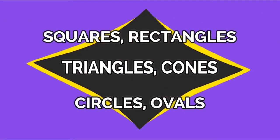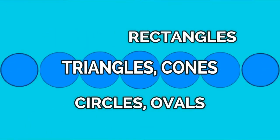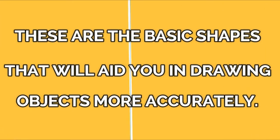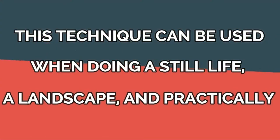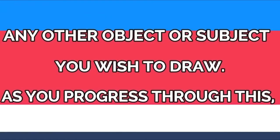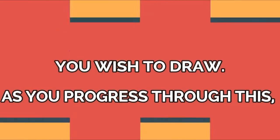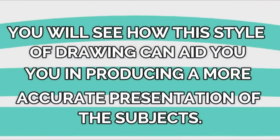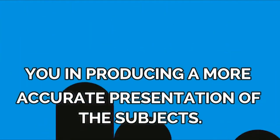Squares, rectangles, triangles, cones, circles, ovals — these are the basic shapes that will aid you in drawing objects more accurately. This technique can be used when doing a still life, a landscape, and practically any other object or subject you wish to draw. As you progress through this, you will see how this style of drawing can aid you in producing a more accurate presentation of the subjects.